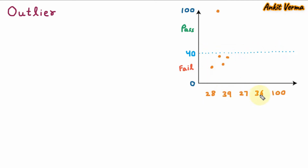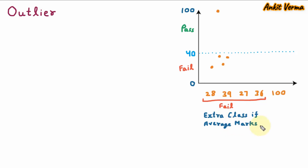That means 4 students are fail. The management has decided to provide extra class if average marks of the class are less than 40 — meaning if maximum people in a class are fail, then they will give the extra class. Here we can see that out of 5 students, 4 are fail, which are in majority, so they need the extra class.